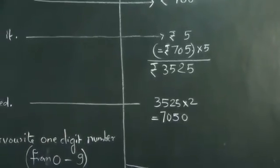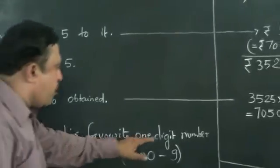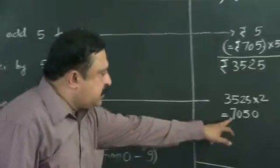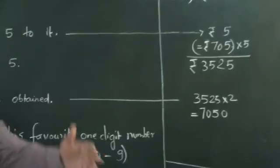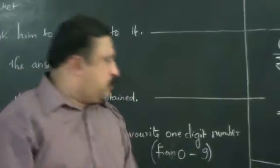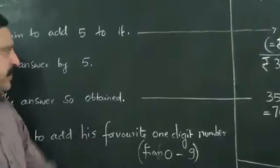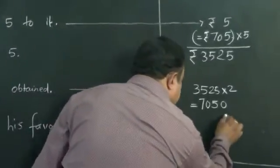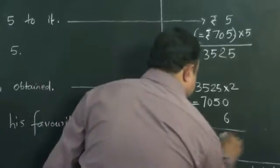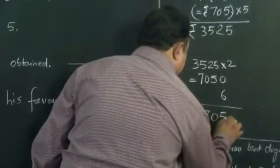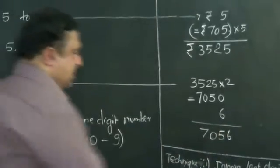Finally, ask him to add his favorite one digit number to this 7050. Let him add any digit from 0 to 9. You ask him to add his favorite one digit. Say for example, he adds 6. Then this number becomes 7056.